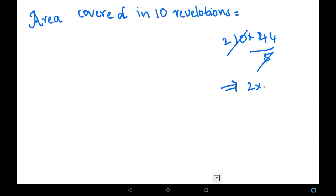So let us solve it. Area covered in 10 revolutions is 10 into 44 by 5. What can we do here? We can cancel this 10 and 5, which will be 2, then it will be 2 into 44.